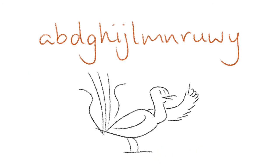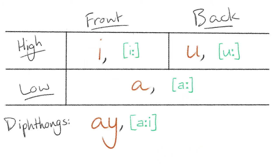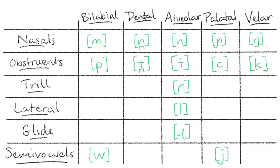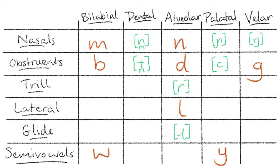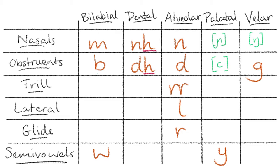Writing system. Gamilarai is written with the standard Latin alphabet, using A, I and U for the vowels, doubling them to signify long vowels, and using voiced letters to transcribe the obstruents — that is, using B for B, D for D and G for G. The glide rhotic R is written with a single R, the trilled rhotic is written with a double RR, dentals D and N are written with alveolar letters followed by an H, and the palatals are written as DJ for the obstruent and NY for the nasal.